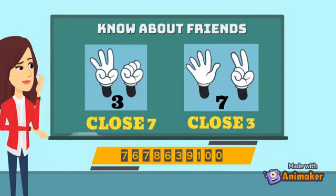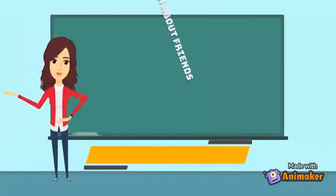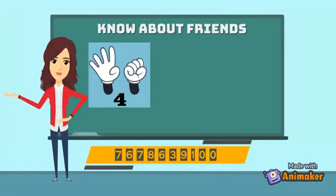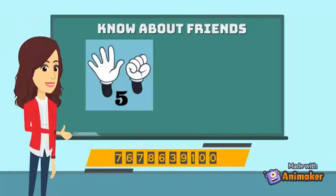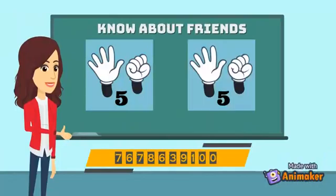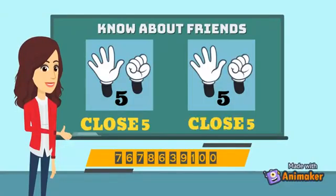Now let's make four on your hand. How many are closed? Six. So four is a best friend of six and six is a best friend of four. Now let's make five on your hand — how many are closed? Yes, five. So five is a best friend of five.